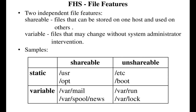It is possible to define two independent distinctions among files: shareable versus unshareable, and variable versus static. In general, files that differ in either of these respects should be located in different directories. This makes it easy to store files with different usage characteristics on different file systems. Unsharable files are those that are not shareable.